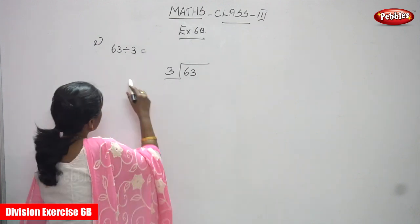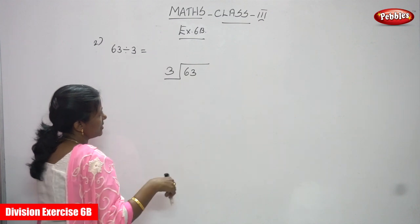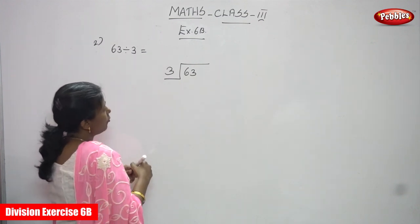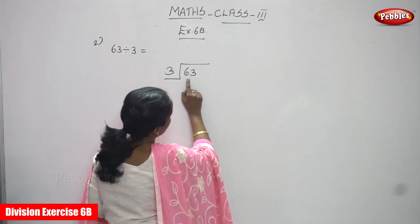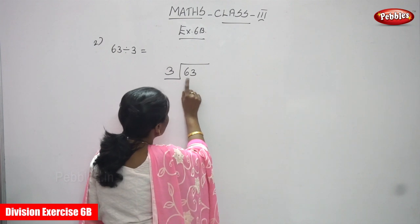Now we are going to do the second sum. 63 is divided by 3. 63 is a dividend and 3 is a divisor. So 63 is going to be divided by 3. First you have to locate the place value. 6 tens and 3 ones. That is 63.